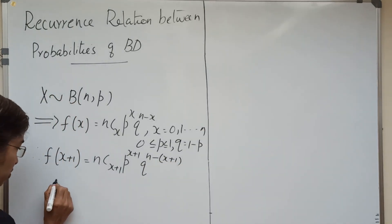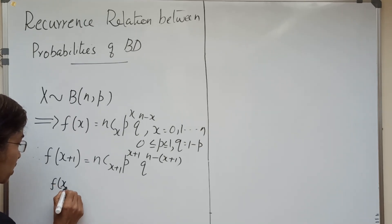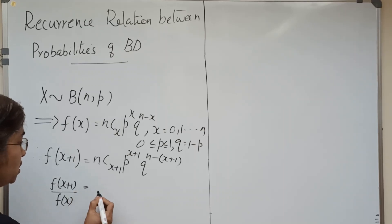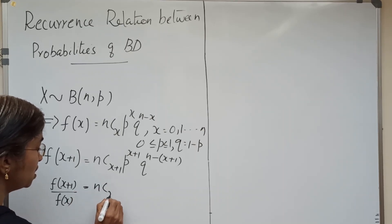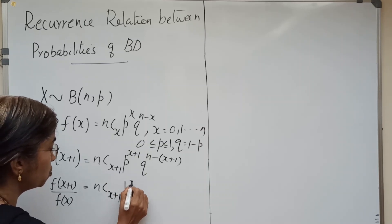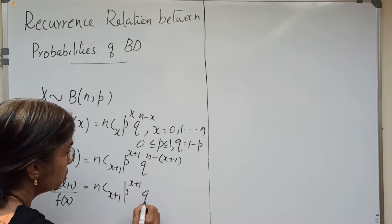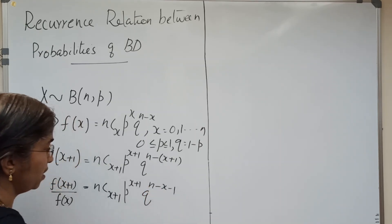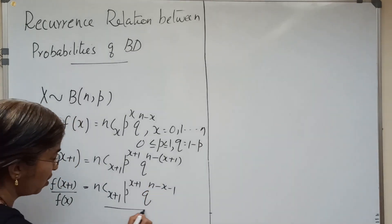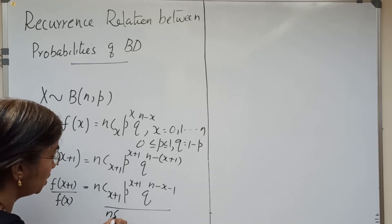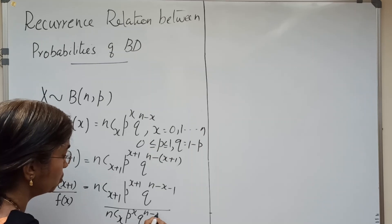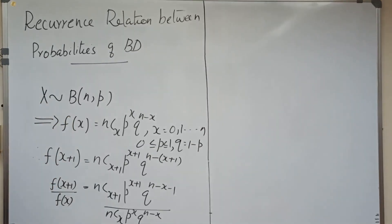Now we find f of x plus 1 divided by f of x. It is simply n-C-(x plus 1), p raised to x plus 1, q raised to n minus x minus 1, divided by n-C-x, p raised to x, q raised to n minus x.